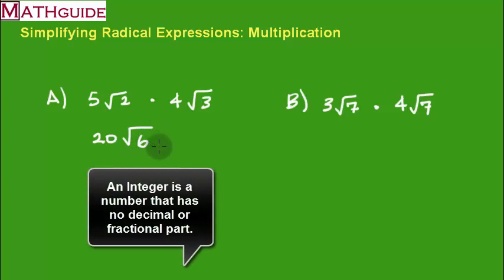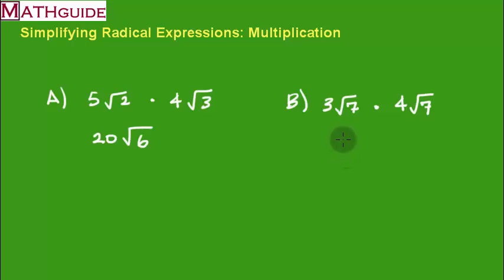There's no integer value that I could take the square root so that if I square that integer value, I get back 6. So we're kind of stuck with this answer. Let's do the same thing here. We're going to multiply 3 times 4 and get 12. And then we're going to multiply 7 times 7 and get 49. Sometimes people leave it 7 times 7. I'm just going to put 49.